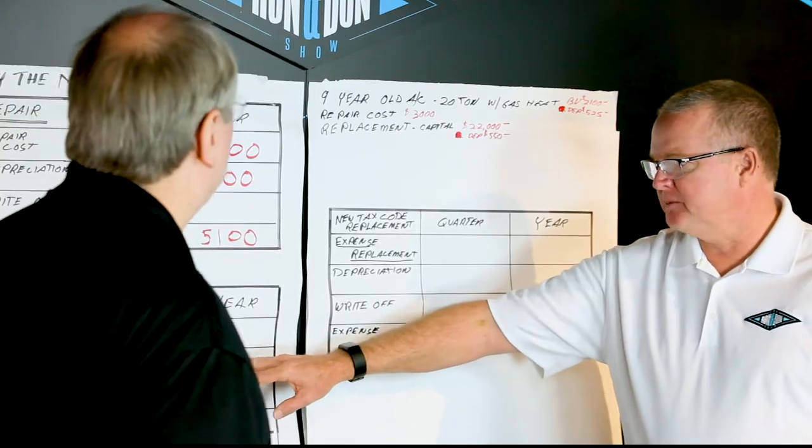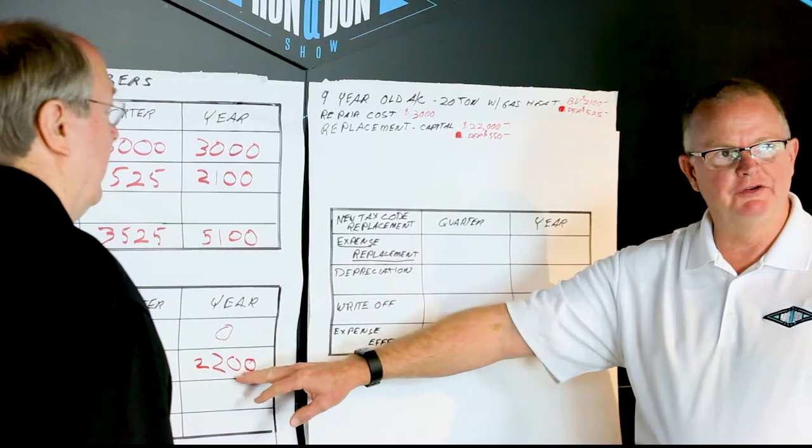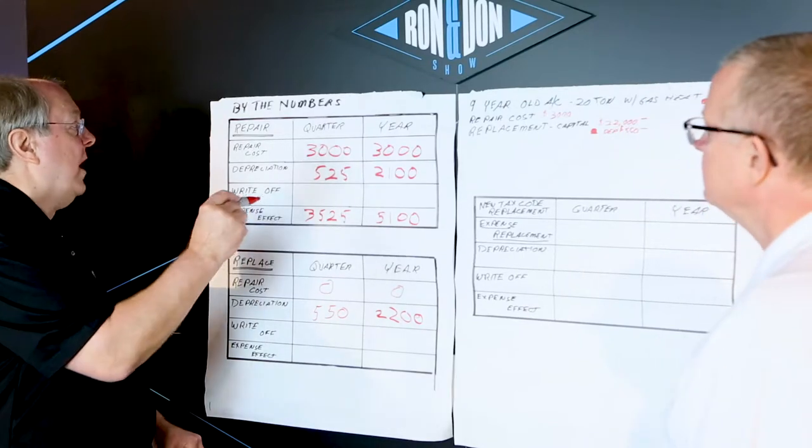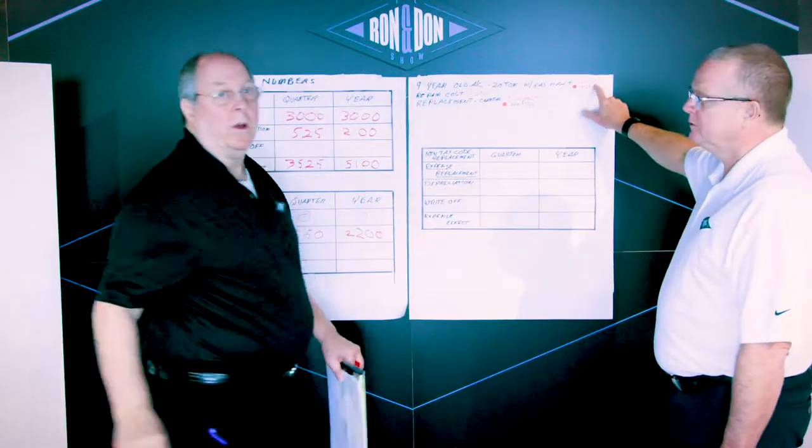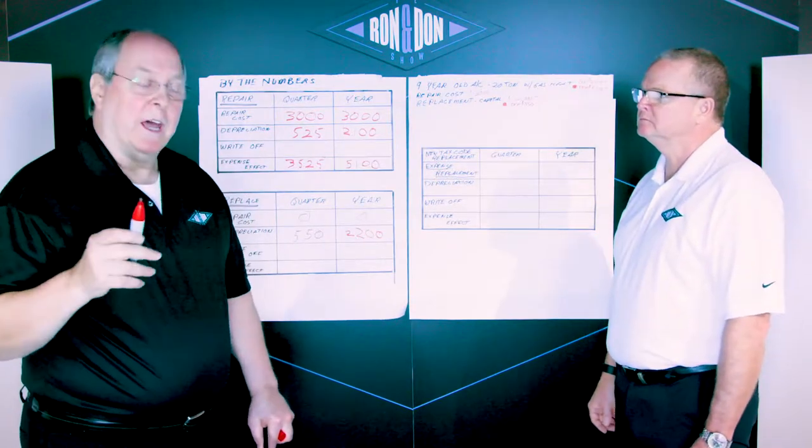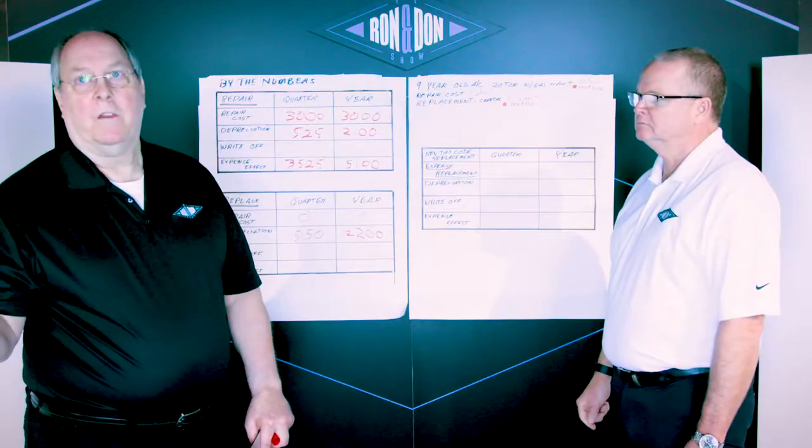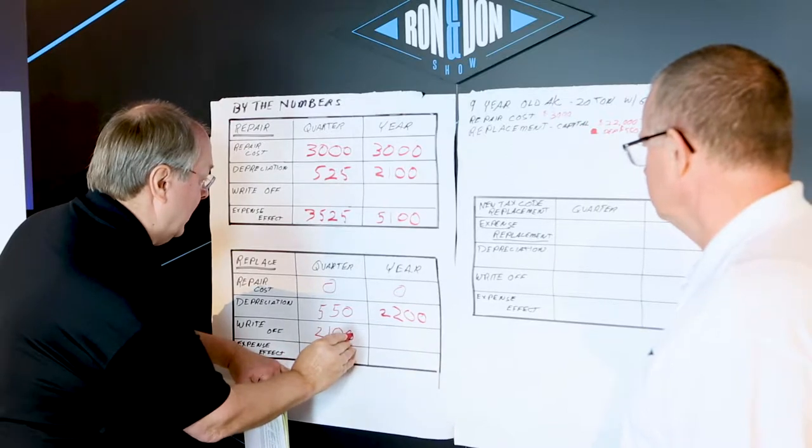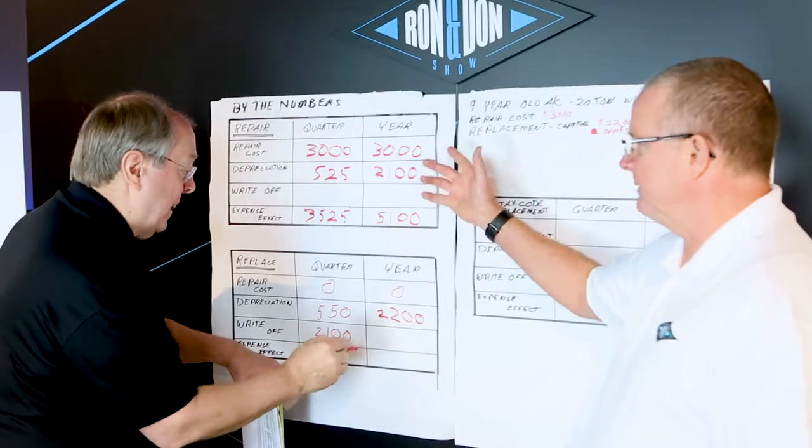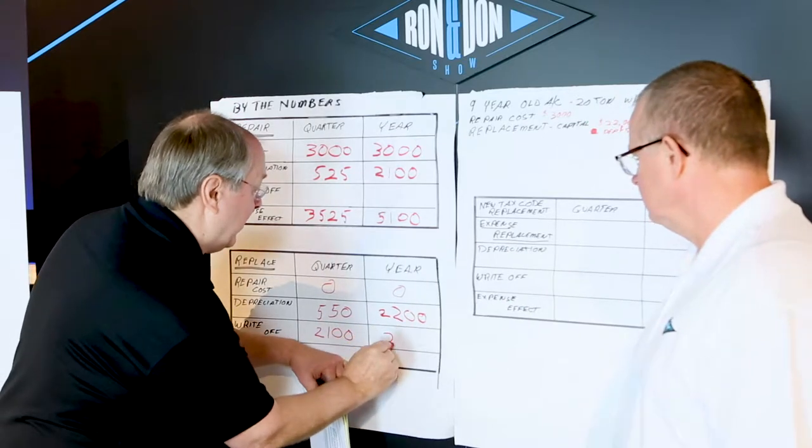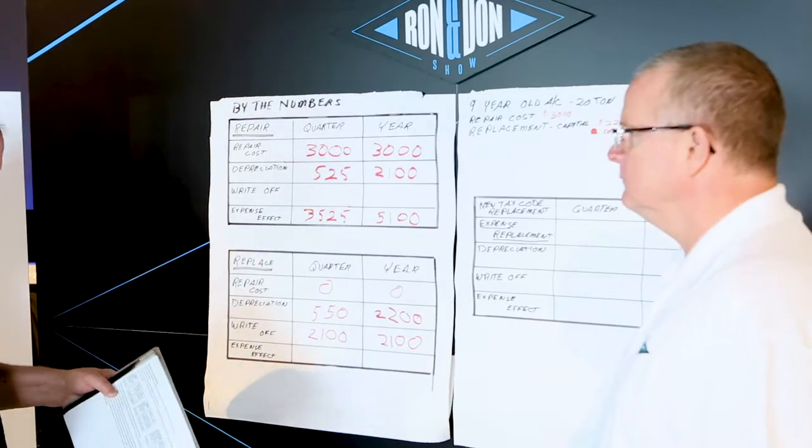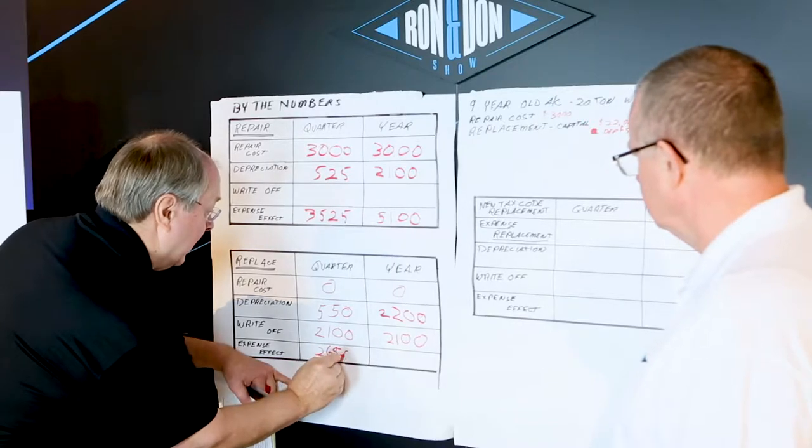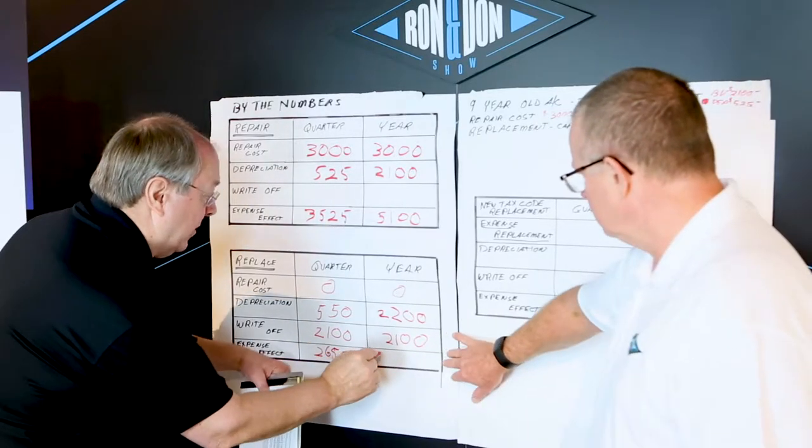So if that's to be depreciated over a 10 year period, that's $2,200 per year. Or one fourth of that, which would be $550 per quarter. That's going to be the effect of this piece of equipment in a replacement scenario over a 10 year period of time, which is considered the life of this piece of equipment. Now, we still have this piece of equipment on the books for $2,100. And because it's being replaced, it has to be written off in that cycle. So you're going to have a write-off of $2,100 in that quarter. So what our net effect here is, we're going to come down to $2,650 and we're going to come down to $4,300.